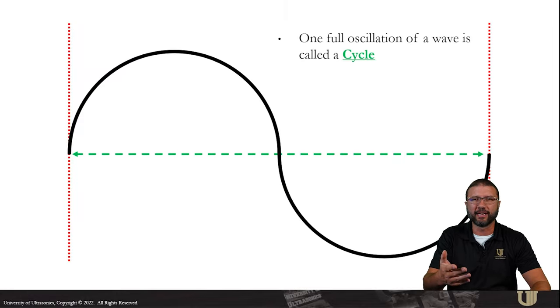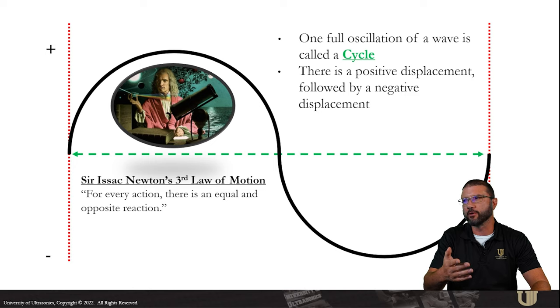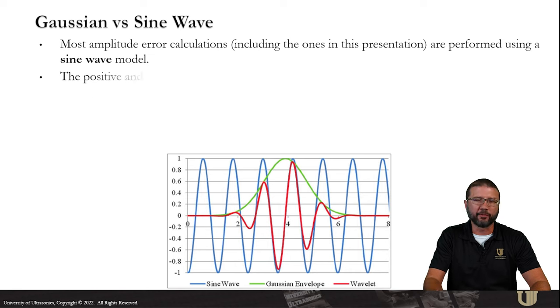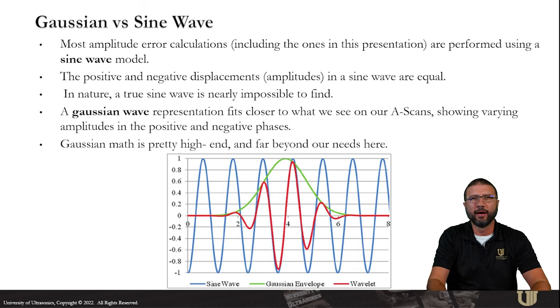To break down and think about how we digitize our A-scans, we have to break our waveform down to the smallest possible unit and that is going to be a cycle. So one full oscillation of a wave is called a cycle. You got a positive displacement and a negative displacement. To me, a cycle is a really good representation of Sir Isaac Newton's third law of motion that states for every action, there's an equal and opposite reaction. The blue line represents a sine wave in which the positive and negative amplitudes are identical. In actuality, the Gaussian wave is a more true representation of the way that our A-scan signals look, but Gaussian wave math and science, it's a little bit more high-end for our needs here. So most of the simple calculations that we're going to deal with are going to deal with sine waves.